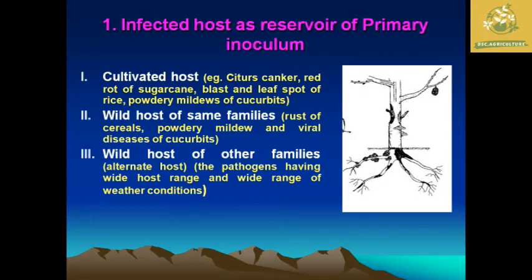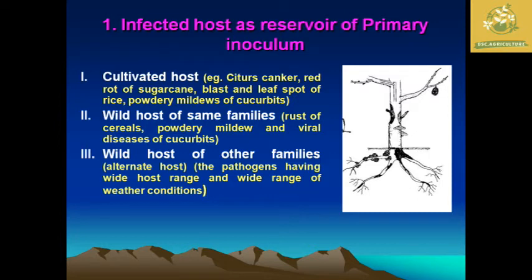The first infected host acts as a primary inoculum. We can classify the ports required by these microorganisms during their infected host stage. The first category is the cultivated host — examples include citrus canker, red rot of sugarcane, blast, leaf spot, powdery mildew of cucurbit. Others are wild hosts of the same families, such as rust of cereals, powdery mildew, and viral disease of cucurbit, as well as wild hosts of other families serving as alternative hosts.